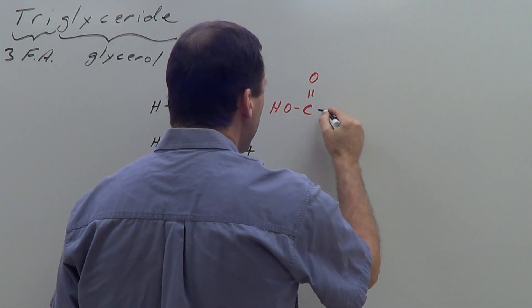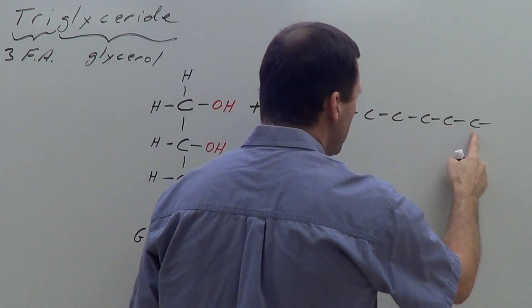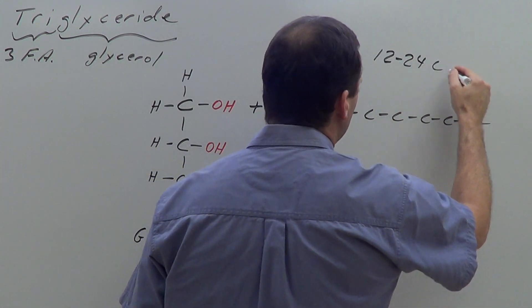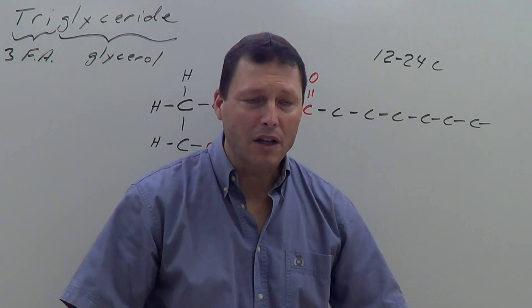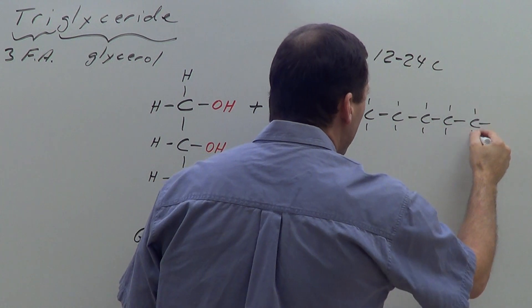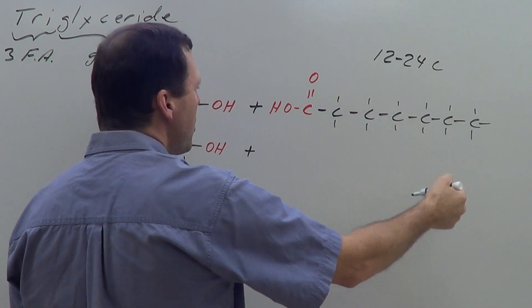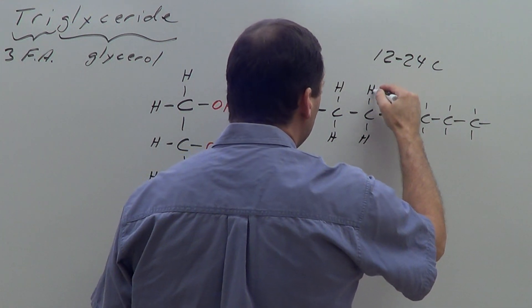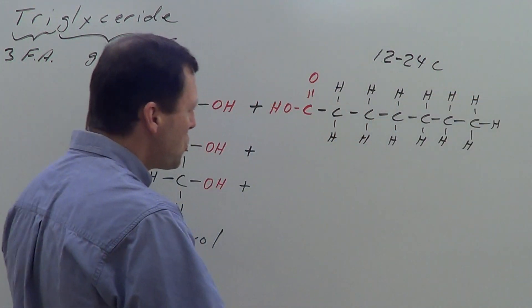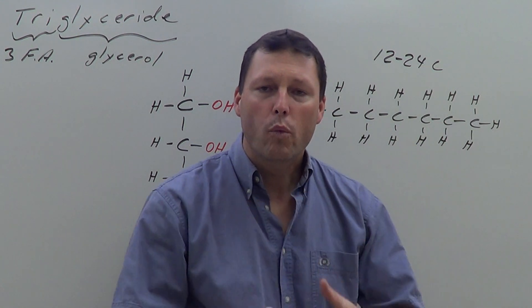I'm going to draw several more carbons in the chain — one, two, three, four, five, six, seven, and so on. In humans, fatty acids are usually about 12 to 24 carbons long. I'll fill in hydrogens, since each carbon wants four chemical bonds. This is where the energy is stored — in the bonds between carbons and hydrogens. When we break those bonds, we release energy. The carbon-hydrogen bond is very nonpolar because carbon and hydrogen tend to share electrons equally, giving them no significant positive or negative charge.